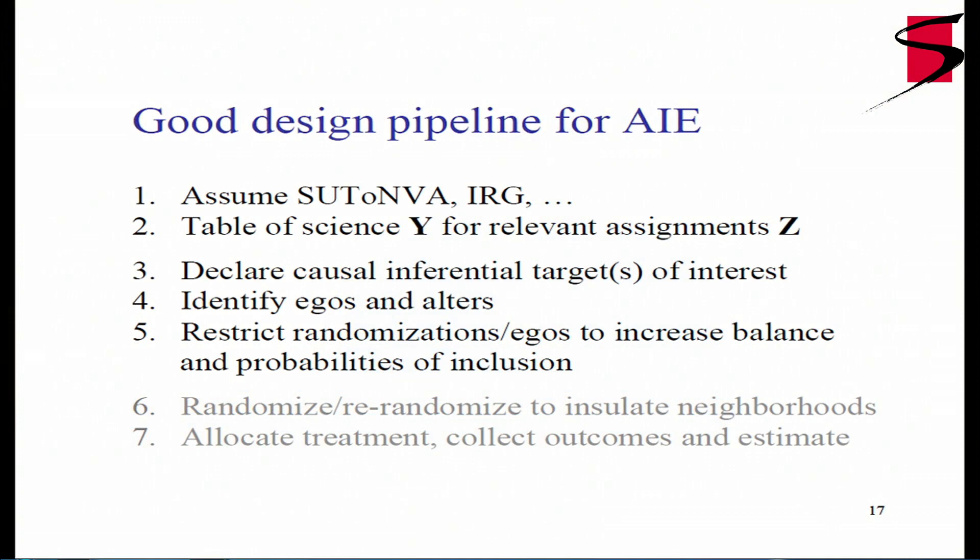Here's a good design pipeline for the average interference effect. You make assumptions about interference; the table of potential outcomes is now a ragged array with a relevant set of assignments on each row. Then you declare the causal inferential target, which identifies egos and alters. You further restrict randomizations and egos to increase balance and probability of inclusion of egos defining the inferential target. Then you randomize and re-randomize to insulate neighborhoods, allocate treatment, collect outcomes, and finally estimate the inferential target.